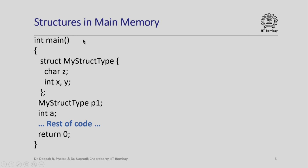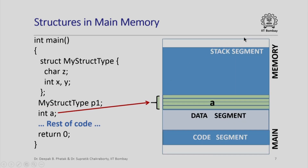Let us quickly see how structures are going to be laid out in main memory. Here is a simple program — this is the main function within which I have declared a structure data type, myStructType. This has three members: member z is of type character, members x and y are of type int. Then I have a variable p1 of structure type myStructType and I also have a variable a of type int. We know that every integer variable needs four bytes of storage. Memory for a will be allocated in the activation record for main when main is called by the operating system, and this activation record will reside in the call stack in the stack segment. So memory for a is allocated in the stack segment, and since we need four bytes and each location of main memory stores only one byte, we have four consecutive locations allocated for the integer variable a.